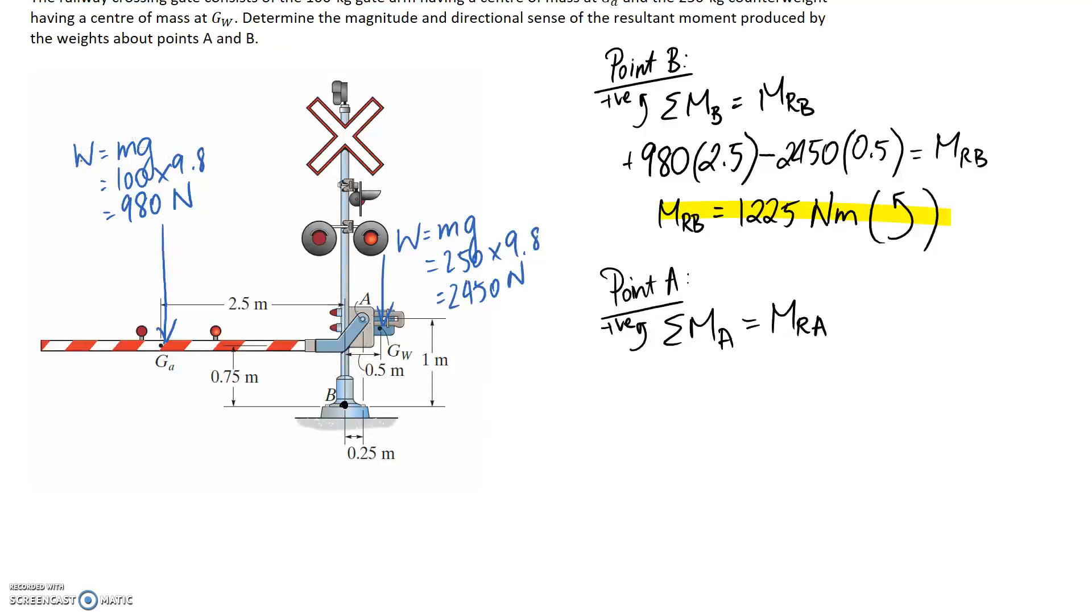Let's again start with this force. We know it's 980 and we need to multiply it by the distance back to point A. So point A is up here. We need the perpendicular distance. If this is vertical, we need the horizontal distance back to here. So it's going to be 2.5 metres plus the little bit extra, which is 0.25. So the total is 2.75 metres.